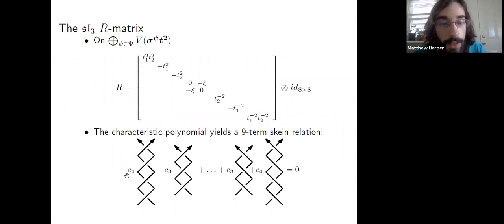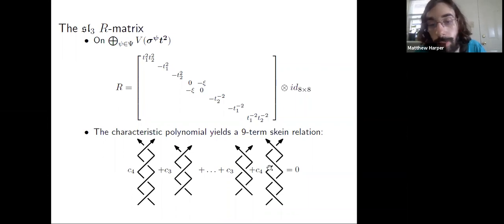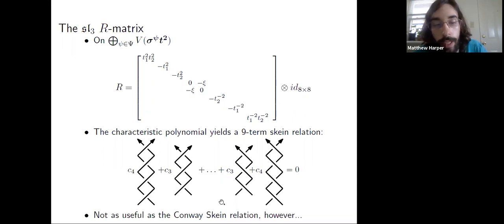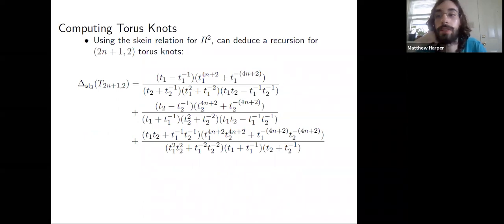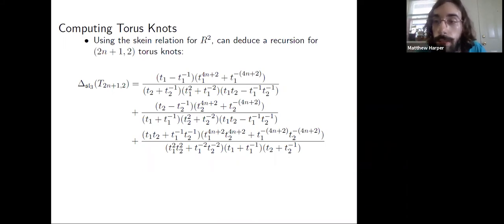Looking at the characteristic polynomial of this block and the minimal polynomial of R gives us a nine-term skein relation — not as computationally helpful as the Conway relation, but it's some relation. A comment: the coefficient of the C_4 of negative crossings is the same as for positive crossings, so it's a symmetric relation. We can still do something with this: if we know eight of the nine invariants, we automatically know the last one. Applying the same idea to R squared gives a recursion relation for torus knots of two strands — if you know eight invariants, you know the next one on your list.